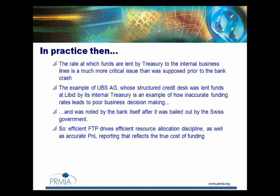For an FTP regime, we're talking about the rate at which funds are lent by treasury. The other side of that is of course the rate at which funds attract when they are placed with treasury. In an FTP regime we will have an FTP curve, and it's both sides of the balance sheet that we're looking at. There isn't a separate regime. So if I am charging for one, two, three or five-year assets to an FTP regime, I will equally be paying out for one, two, three, five-year liabilities. The rate at which funds are lent by treasury is much more critical than, essentially, pre-crash.